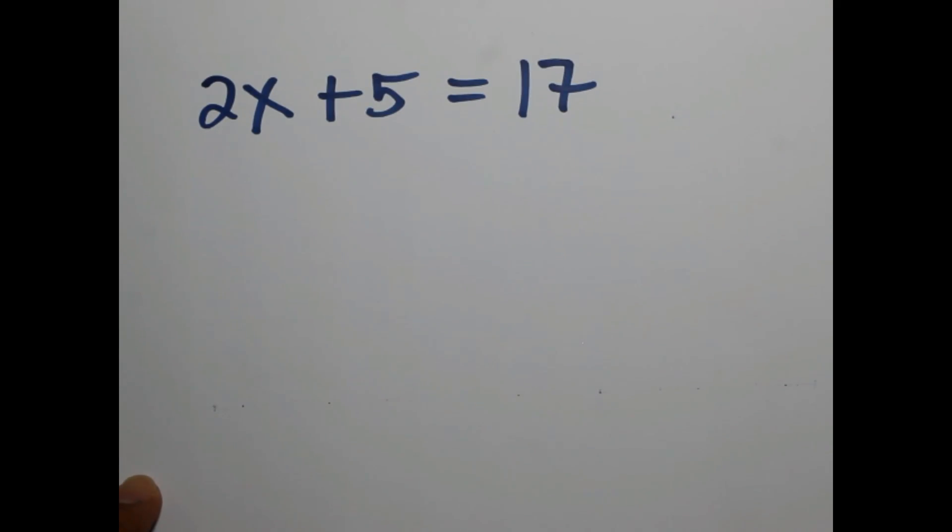So we will start with the basic one: 2x plus 5 is equal to 17. Meaning to say, we are going to find the value of x such that when we multiply by 2 and add to 5, the sum is 17.